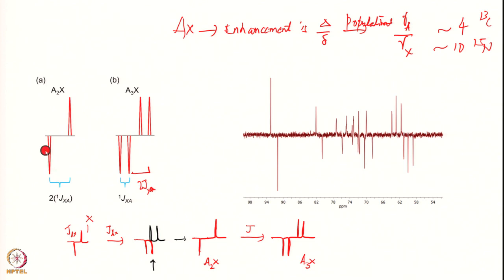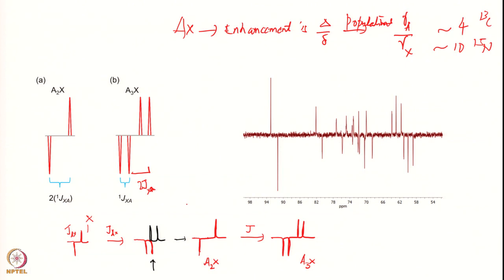You may tend to think that an A₂X INEPT spectrum looks like an AX with a coupling constant twice the normal one-bond coupling — but that is not the case. It is actually A₂X, and because of the sequence you get a separation of 2×JAX with the central line vanished. So while INEPT circumvents the selectivity problem, it still has antiphase problems and missing signals in the middle — these are disadvantages. So we have missing central lines.